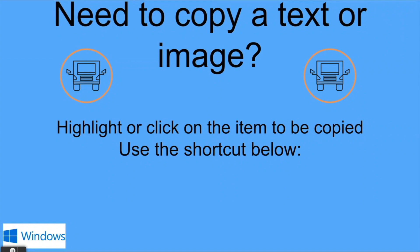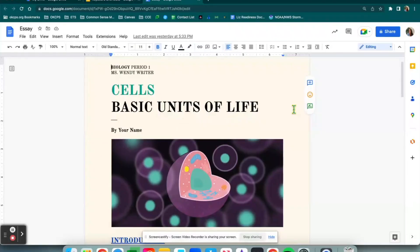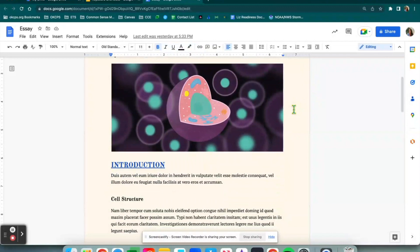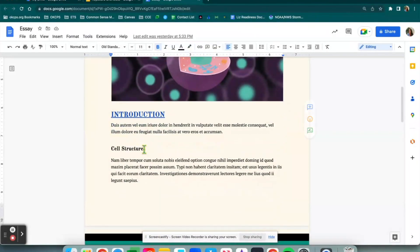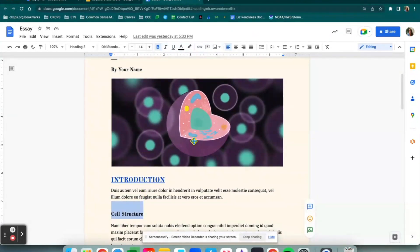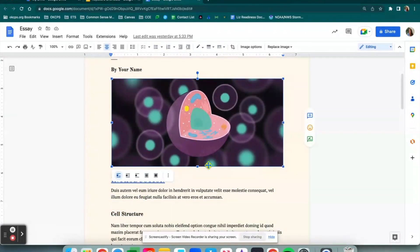The next one we're going to go over is how to copy text or an image. You need to highlight or click on the item that you want to be copied and then use this shortcut: Control+C. Let's say you're working in a Google Doc or you've opened up a Google browser and searched something you want to copy for later. You're going to hold your mouse to highlight it and then Control+C, and now that piece is copied to your clipboard. If you would like to copy an image, click on it so it is highlighted — you'll see blue blocks around it — and Control+C will copy it.